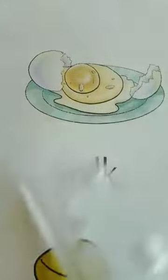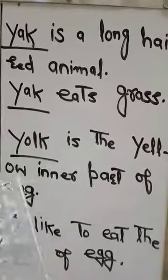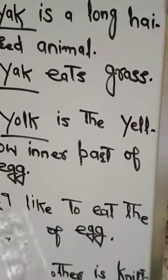Y is for yolk. Yolk is the yellow inner part of egg. Yolk kya hai — jo zard hissah hoota hai, jab hum egg ko todte hain, to uske andar jo zard hissah hoota hai, usee hum yolk kehte hain. Yaani ande ki jo zardi hoti hai, usee hum yolk kehte hain. Yolk is the yellow inner part of egg. I like to eat the yolk of egg.